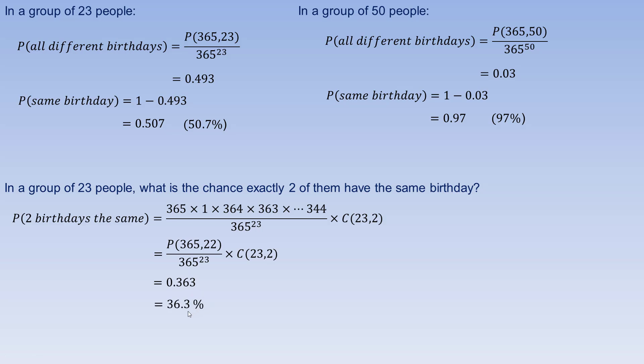So that's the probability that exactly two of them have the same birthday. The probabilities seen earlier were higher because it could be any number of people sharing a birthday. Any one specific possibility is pretty small, but when you add them all up — because there are so many possibilities — that's why those probabilities become fairly large.